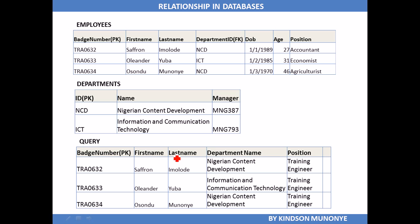We need to present data in terms of the badge number, first name, last name, department name, and position — a table that gives us data selected from both the employees table and the department table. The badge number, first name, and last name come from the employees table. The department name comes from the department table, and the position comes from the employees table. As we demonstrate in Microsoft Access, take note of how relationship and referential integrity work in a database.